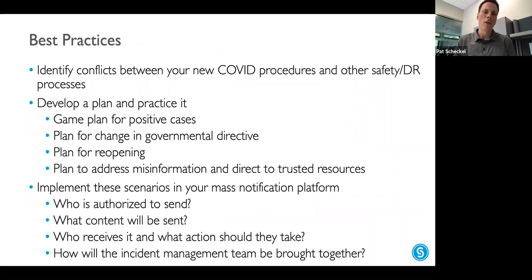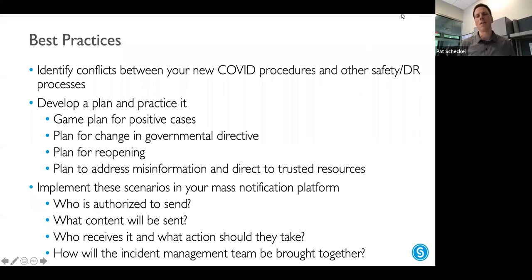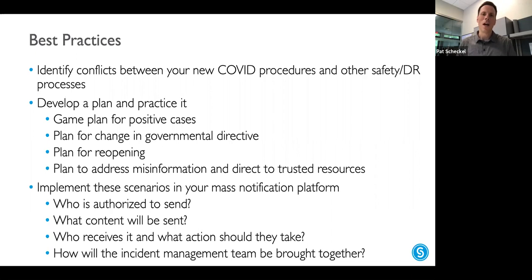Working with our notification experts, we looked at best practices you can implement today to merge into the new normal — really a gap analysis between the way things were and the way things are now. First, identify conflicts between your new COVID procedures such as social distancing and masking, and other safety or disaster recovery processes. For example, think about how you might handle a tornado drill — typically you go to the interior of a building and huddle in close quarters against an interior wall, but social distancing would suggest that's not a great idea right now.